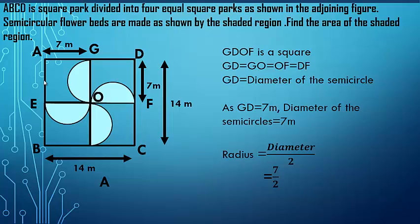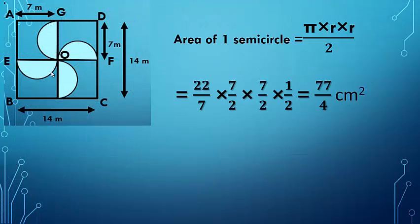The radius is half of the diameter, which is 7/2 here. The area of one semicircle is π r² / 2, or π × r × r / 2. Here r means radius. So: 22/7 × 7/2 × 7/2 × 1/2, which gives 77/4 centimeter square. We keep the area of one semicircle in fraction form, as it will be easier to multiply four with this fraction when finding the area of four semicircles.